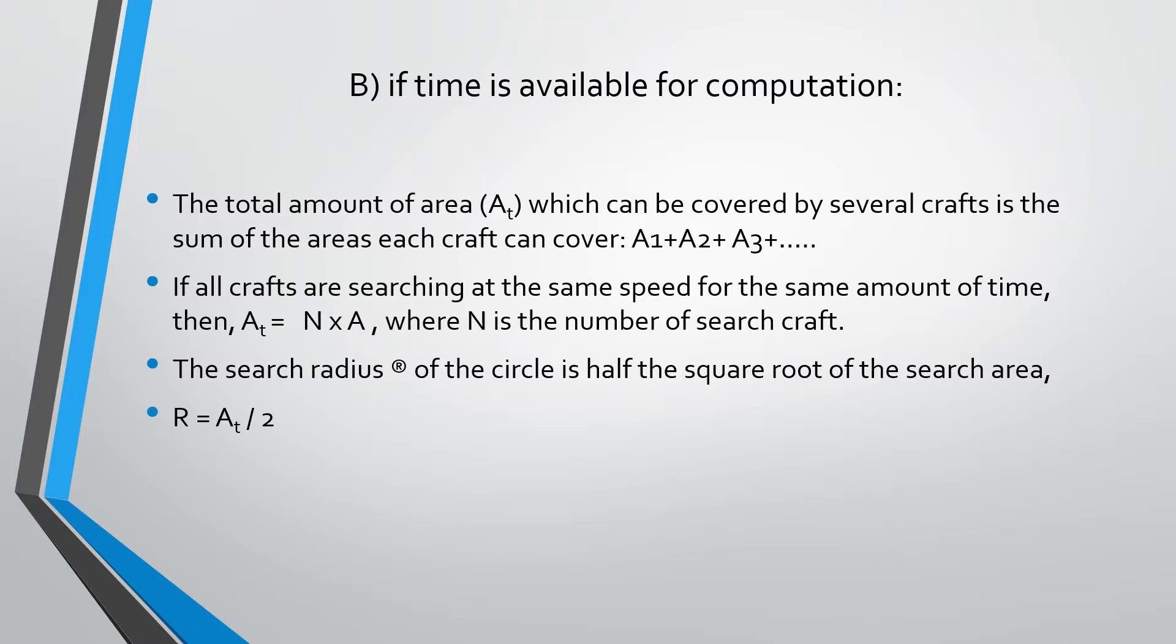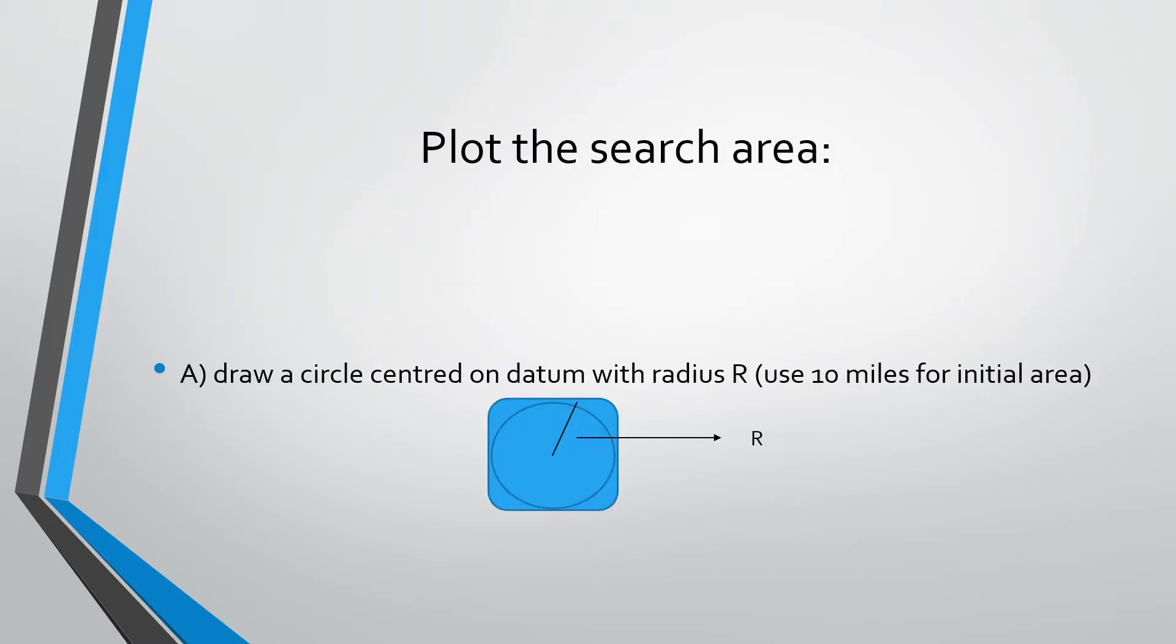The search radius R of the circle is half the square root of the search area. So R becomes AT, which is the total amount of area, divided by 2. Finally, you can learn about plotting the search area.